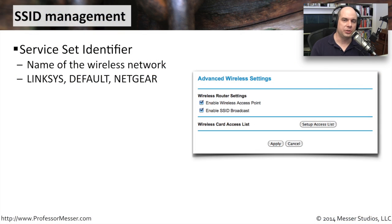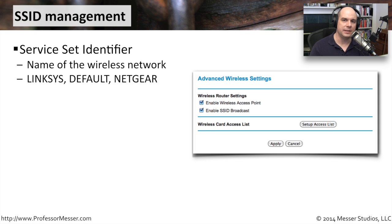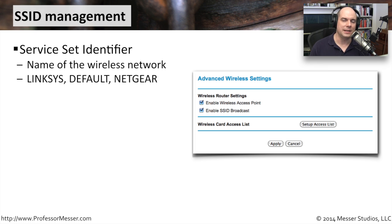If you've ever noticed when you searched for a wireless access point, you were able to find the name of the access point. It pops up on the screen: what access point would you like to connect to? Maybe Linksys, or Default, or Netgear, or a name that's very specific that someone has programmed into their wireless access point. Being able to identify wireless access points so easily also brings up some security concerns.